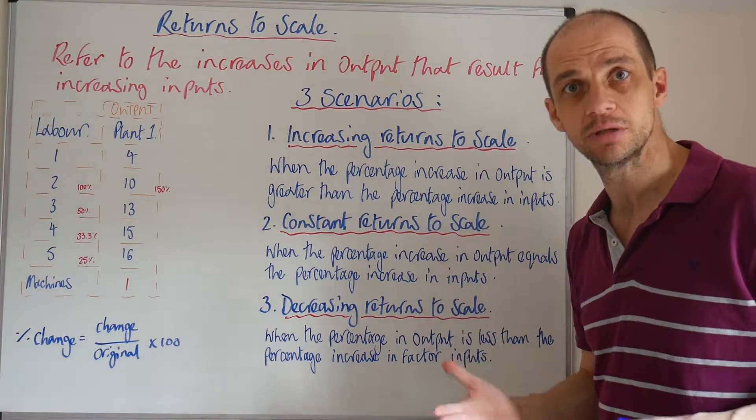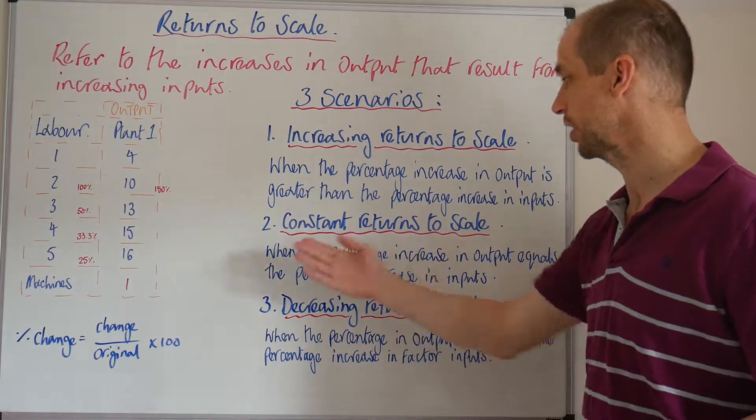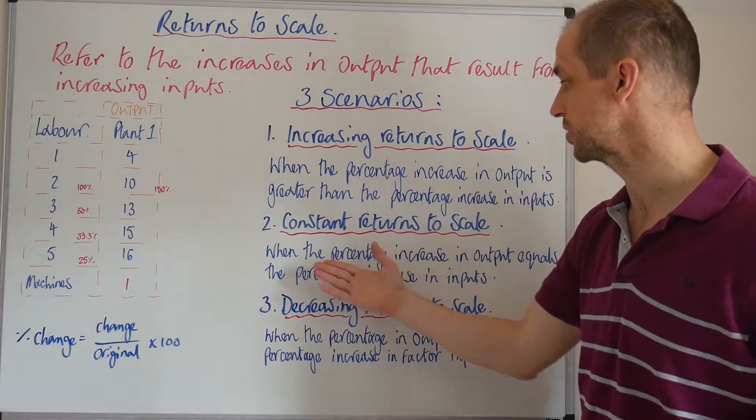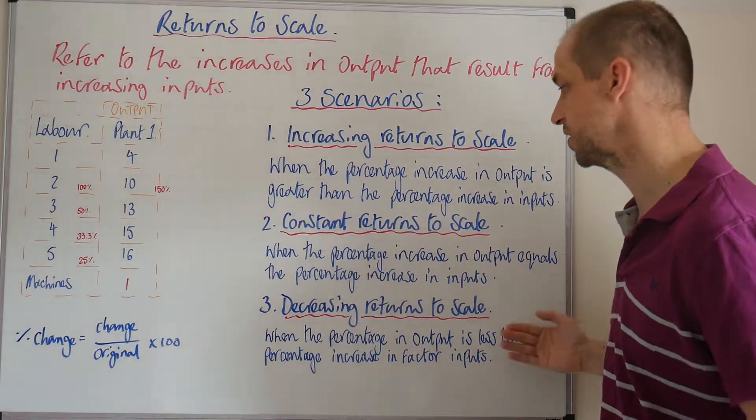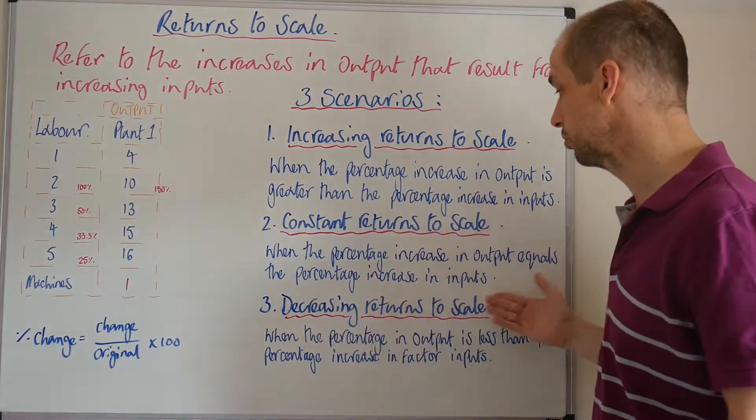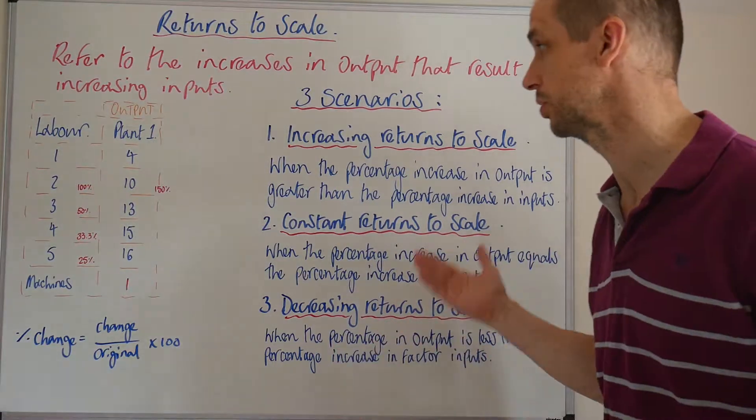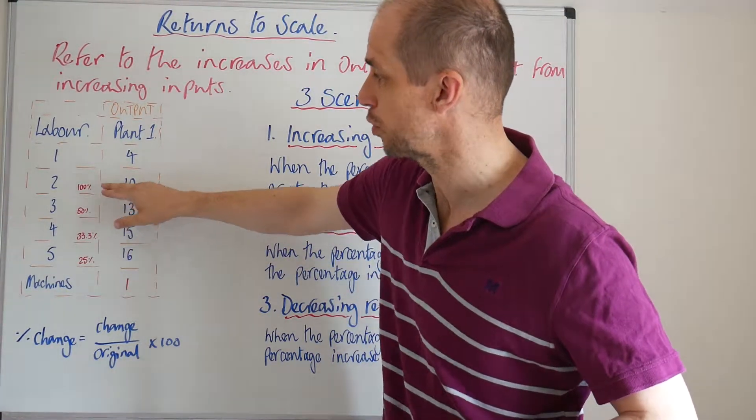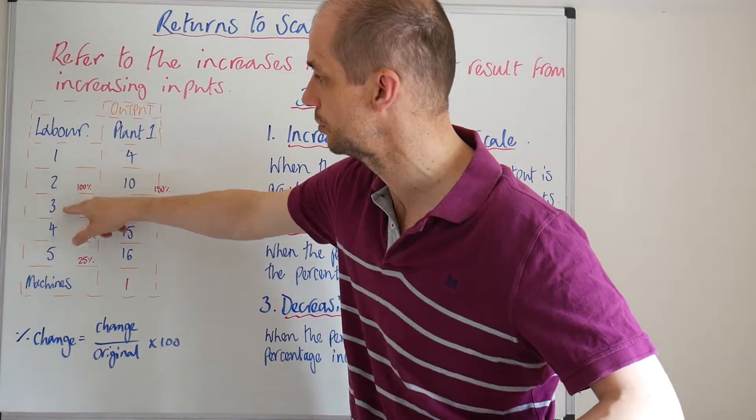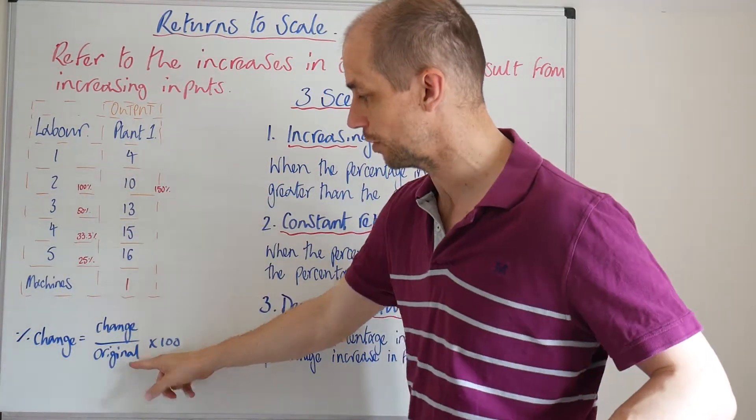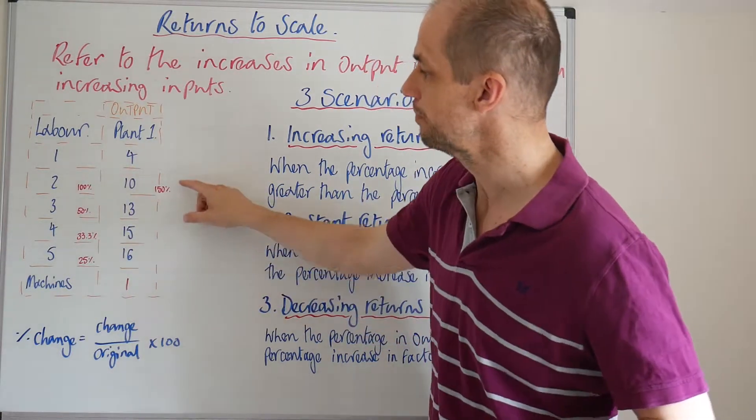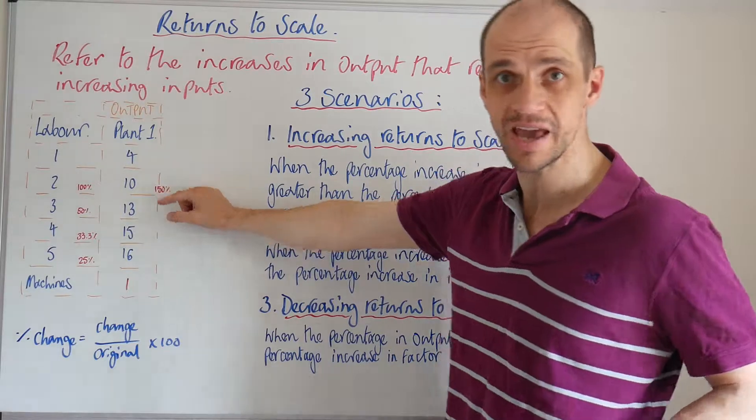What organisations may then face thereafter is constant returns to scale. Constant returns to scale is when the percentage increase in output is equal to the percentage increase in inputs. Here we've got a 50% increase in labour inputs because we're moving from 2 to 3. So 1 divided by 2 would equal 50%. So if we saw a 50% increase here,